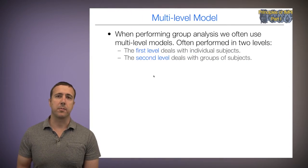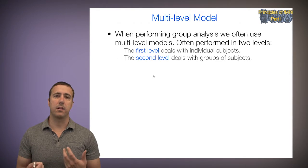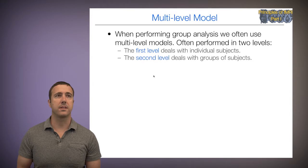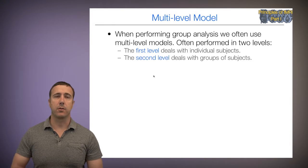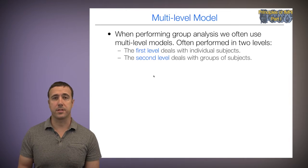So let's recap the multilevel model. There are two levels in our typical model. The first level deals with individual subjects and conducts a model within one subject. The second level deals with groups of subjects and either constitutes one sample t-test across subjects or an analysis across groups like patients versus controls, for example.